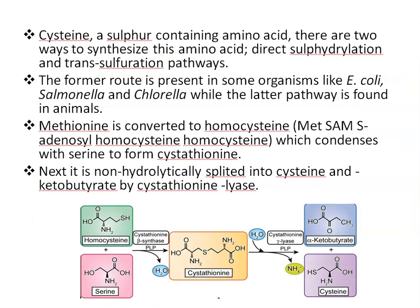Next is cysteine. Cysteine is a sulfur-containing amino acid, and there are two ways to synthesize cysteine: one is direct sulfhydrylation, and second is the trans-sulphuration pathway. Direct sulfhydrylation is present in some organisms like E. coli, Salmonella, and Chlorella, while the trans-sulphuration pathway is found in animals. Here, methionine is converted to homocysteine, which condenses with serine to form cystathionine with the help of enzyme cystathionine-beta-synthase. Then, cystathionine is non-hydrolytically split into cysteine and alpha-ketobutyrate by an enzyme, cystathionine lyase.